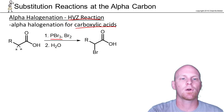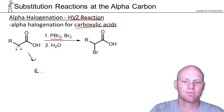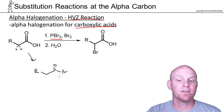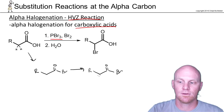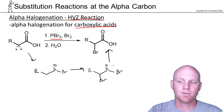The first thing we do is add PBr3, and if you recall, with a carboxylic acid PBr3 will actually convert the carboxylic acid into an acid bromide. Whereas the carboxylic acid is not all that acidic at the alpha carbon, the acid bromide is much more acidic at the alpha carbon, and so with Br2 you now get alpha halogenation taking place.